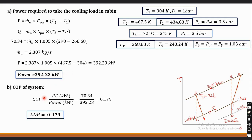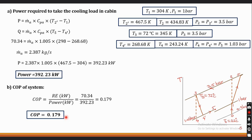Next, we find the COP of the system. COP = output / input = refrigerating effect / power required = 70.34 / 392.23 = 0.179. So the COP of the system is 0.179. This is how we solve a problem on a simple air refrigeration system.